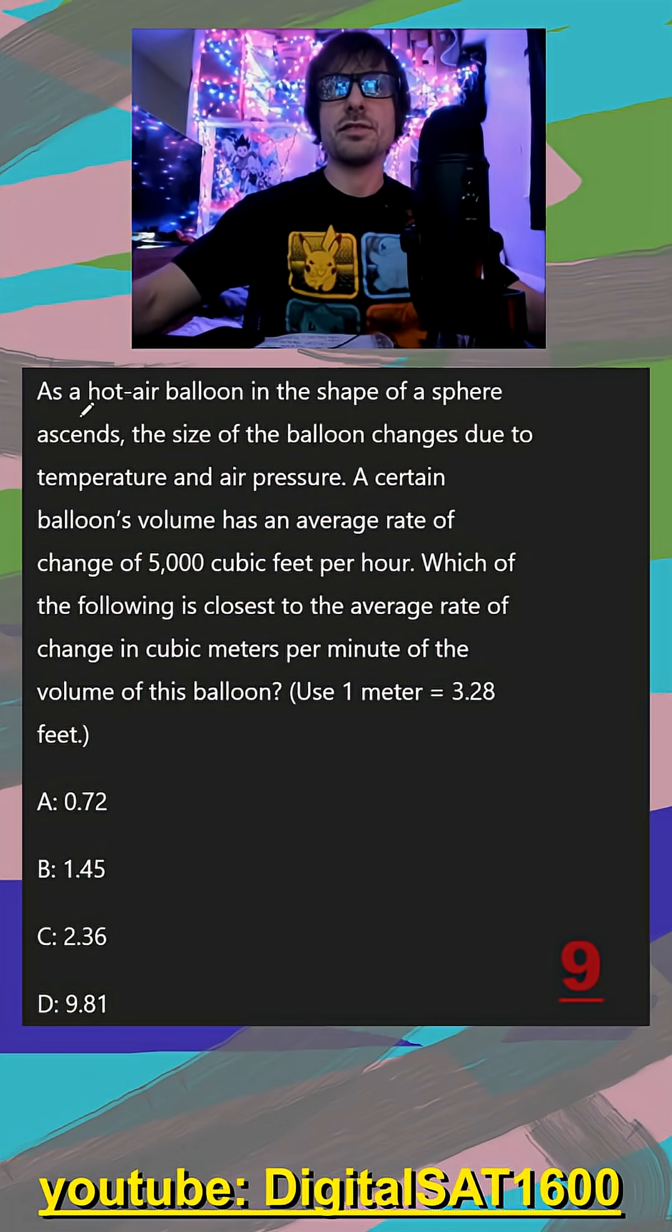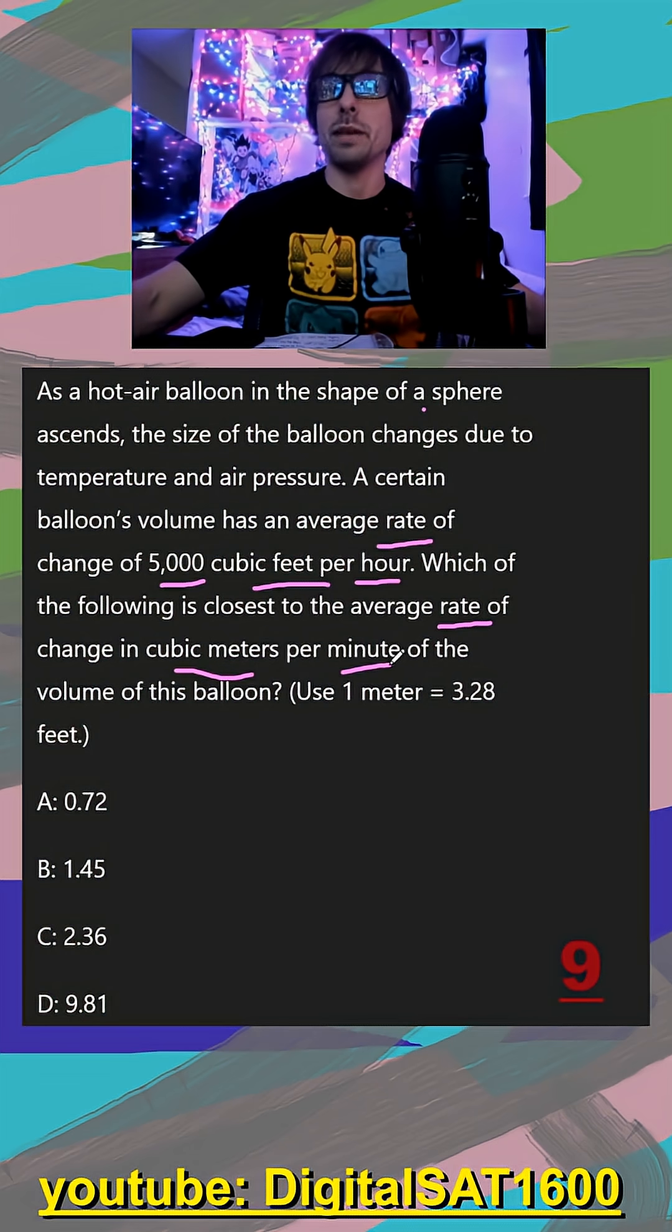As a hot air balloon in the shape of a sphere ascends, the size of the balloon changes due to temperature and air pressure. A certain balloon's volume has an average rate of change of 5,000 cubic feet per hour. Which of the following is closest to the average rate of the change in cubic meters per minute?